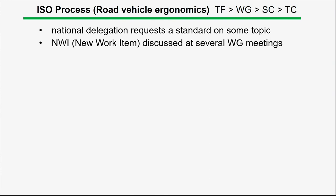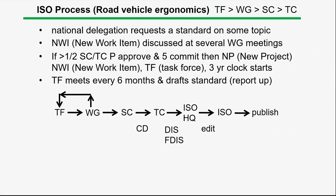This is usually discussed at the working group level. The working groups within subcommittees are where the real discussion happens and details are worked out. Once the working group decides there should be a standard, the item is associated with a task force — a subgroup of the working group. The working group might be 10-15 people; the task force might be 3-5. It's easier to get things done in a small group with the most interested parties. There's a lot of back and forth between the working group and the task force until there's real agreement. Typically task force members are a subgroup of the working group, representing a variety of countries — mainly the major car-producing countries.